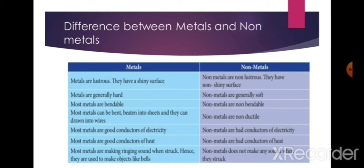Difference between metals and non-metals: metals are lustrous with a shiny surface; non-metals are non-lustrous with a non-shiny surface. Metals are generally hard; non-metals are soft. Most metals are bendable; non-metals are non-bendable. Metals are malleable and ductile; non-metals are non-ductile. Most metals are good conductors of electricity; non-metals are bad conductors. Metals are good conductors of heat; non-metals are bad conductors of heat. Most metals make a ringing sound when struck.